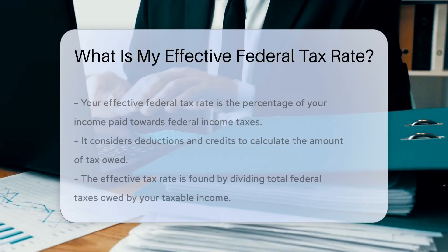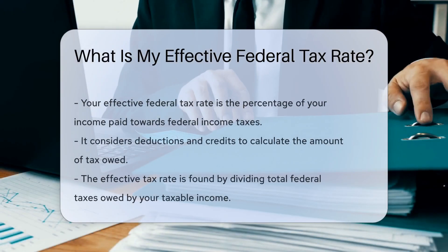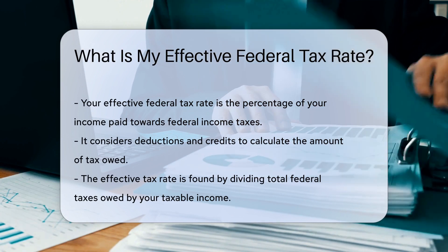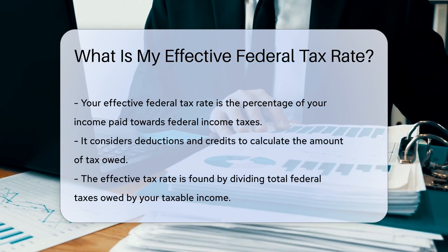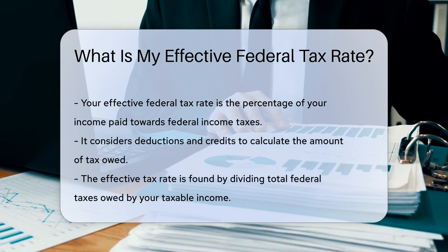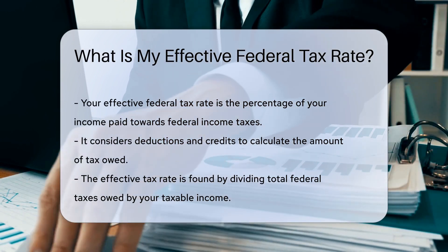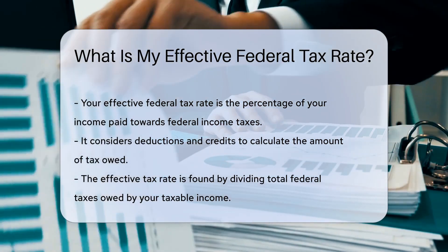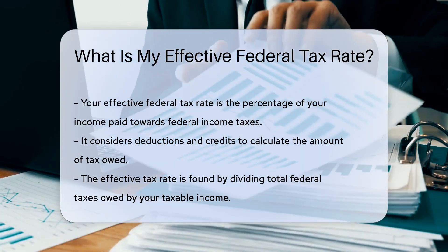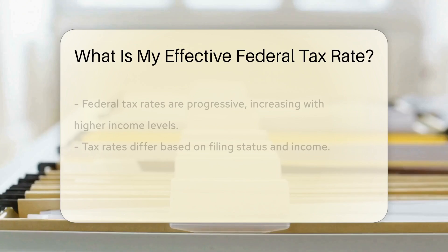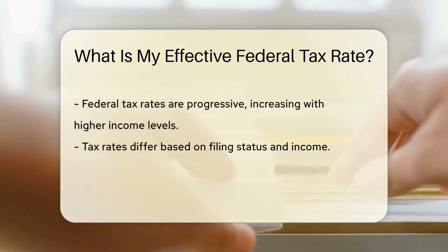Your effective federal tax rate is the percentage of your income that goes towards federal income taxes after accounting for deductions and credits. It is calculated by dividing the total federal taxes you owe by your taxable income.